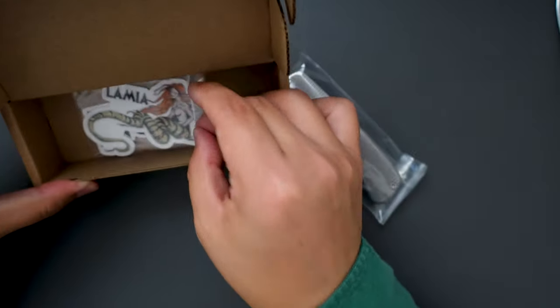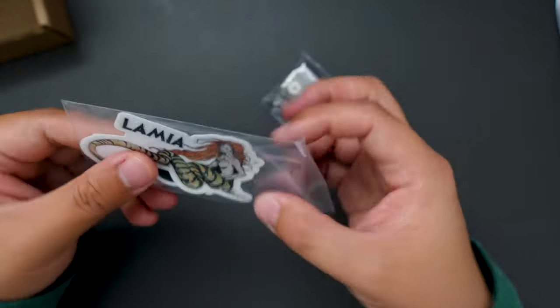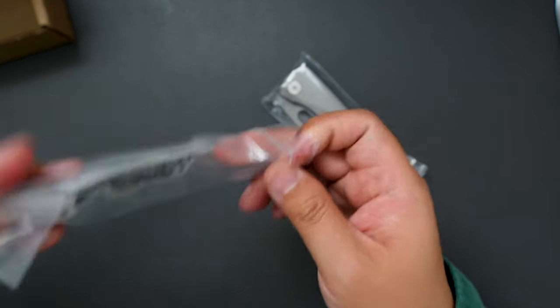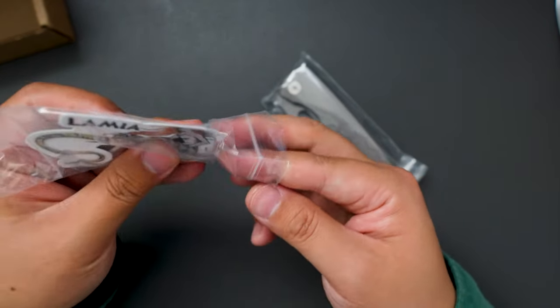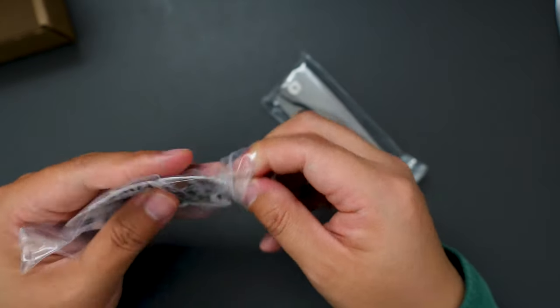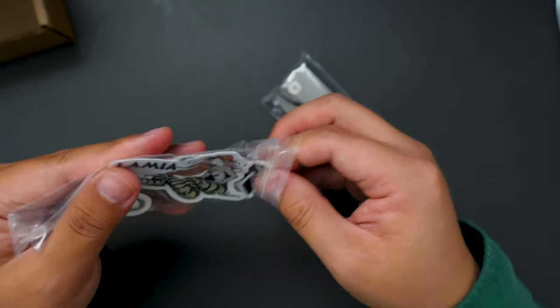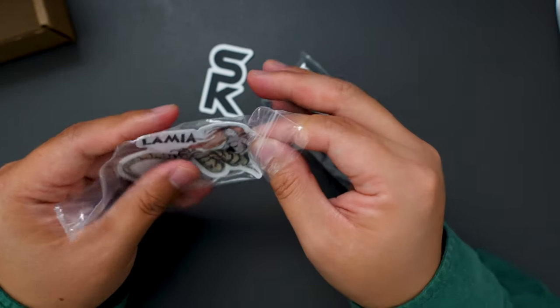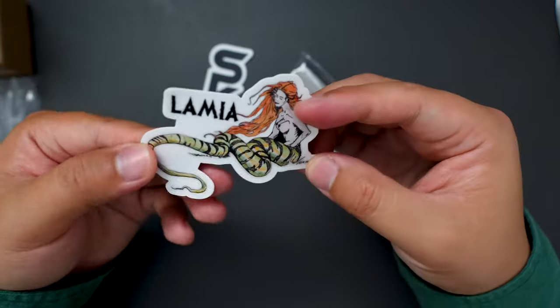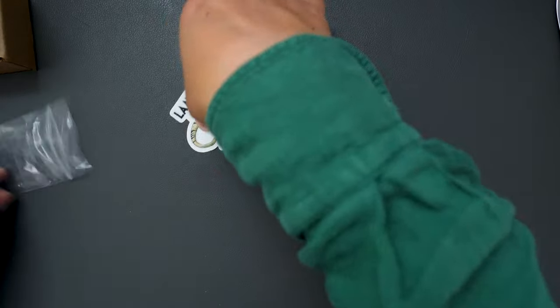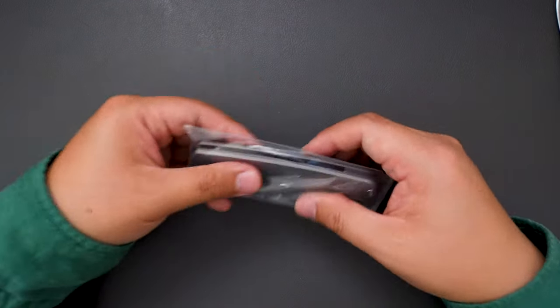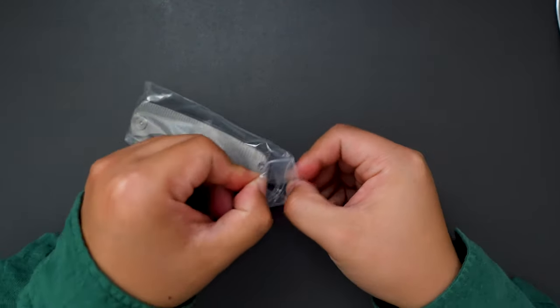Looks like we got the knife and we also got some stickers. Check out the stickers first. Get it out. The logo and also the Lamia Seeker. I think he also made some fixed blades. Maybe sometime in the future I will check that one out as well.